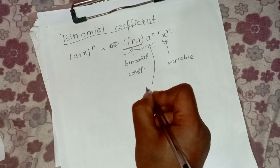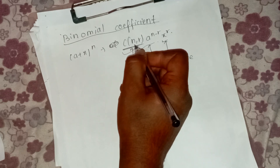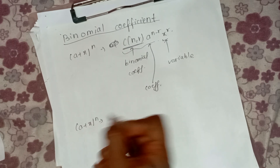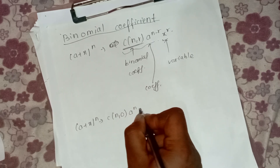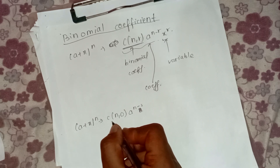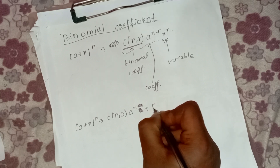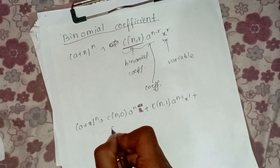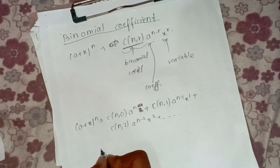We call it C(n, r) and x to the power n. The expansion begins with C(n,0) times a to the power n, then C(n,1) times a to the power (n minus 1) times x to the power 1, then C(n,2) times a to the power (n minus 2) times x to the power 2.